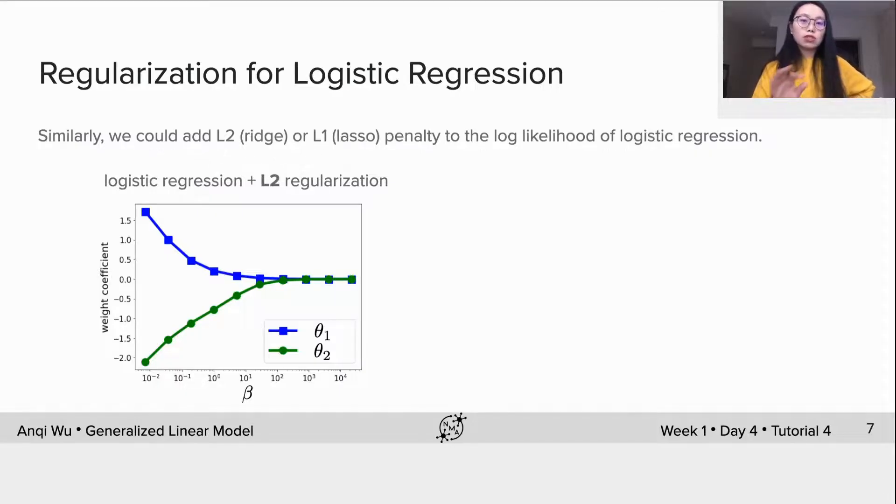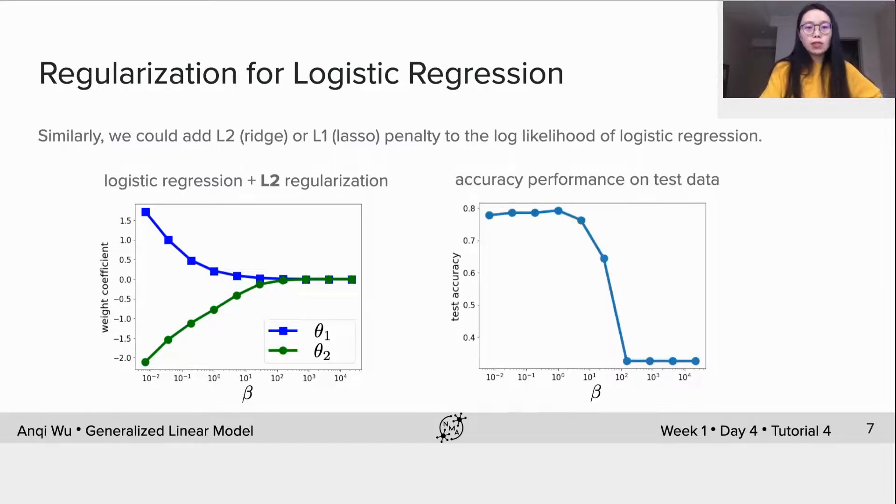We vary the hyperparameter beta from small to large shown in the x-axis. We can see the magnitudes of these two coefficients decrease gradually all the way to zero together. Thus, there is no feature selection with L2 penalty. It doesn't prefer one over the other. We also plot the accuracy performance on the test data given different beta values. We can see the accuracy increases a bit, peaks at about beta equals 1, and then decreases as beta continues increasing.